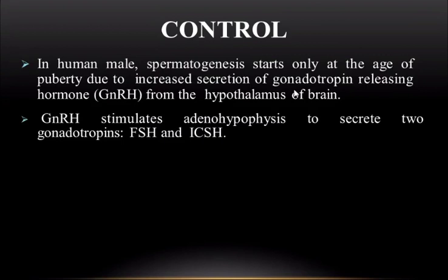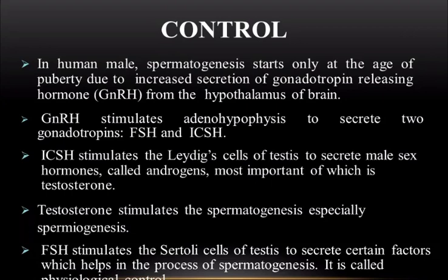In the human male, spermatogenesis starts only at the age of puberty due to increased secretion of gonadotrophin-releasing hormones from the hypothalamus of the brain. These hormones stimulate the adenohypophysis to secrete two gonadotrophins: FSH and ICSH. ICSH stimulates the Leydig cells of the testis to secrete male sex hormones called androgens, the most important of which is testosterone. Testosterone stimulates spermatogenesis, especially spermiogenesis. FSH stimulates the Sertoli cells of the testis to secrete certain factors which help the process of spermatogenesis. This is called physiological control.